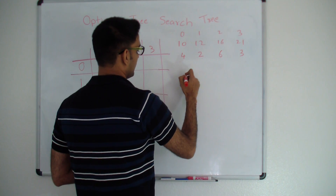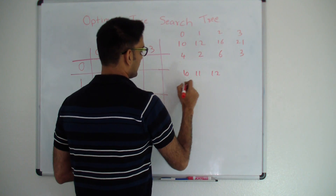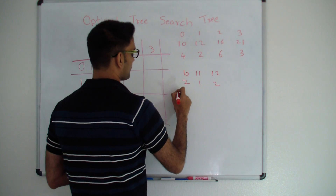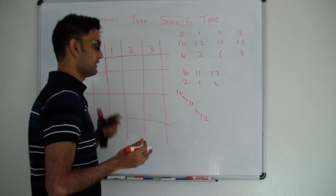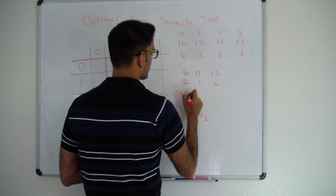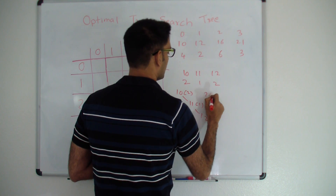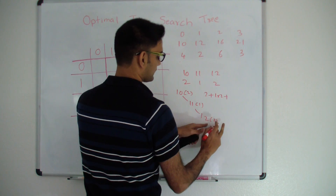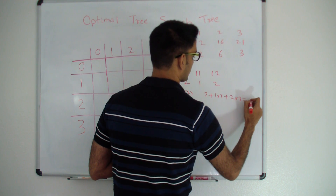Let me give you an example. If I had 3 keys — 10, 11, and 12 — and they are searched at frequency 2, 1, and 2, I can have 3 trees. One of them is 10, 11, 12. Remember, in a binary search tree, left is less than root and root is less than right. The total cost of searching here will be 2 at level 1, plus 1 into 2 at level 2, plus 2 into 3 at level 3. So the total cost is 2 plus 2 plus 6 which is 10.